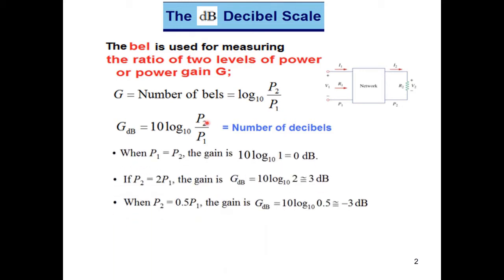Now if the two powers are same, the ratio will become one and the log of one will be zero. So this will become 0 dB. So actually this is the reference point from where we start measuring.